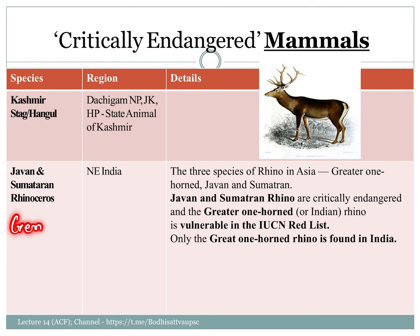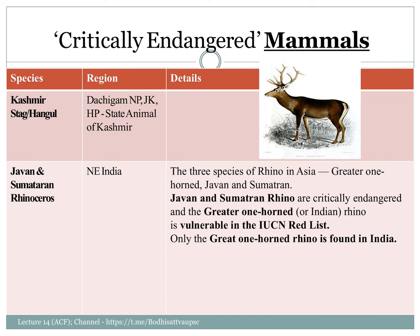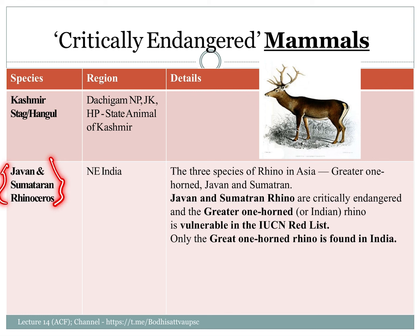This is an example of genetic biodiversity. Java is an isolated island, Sumatra is an isolated island, and that is where they adapt to the climate. Java rhinos come under the critically endangered category. In Java, Malaysia, and Indonesia, there is a lot of agricultural cultivation. This has led to the destruction and fragmentation of their natural habitat.